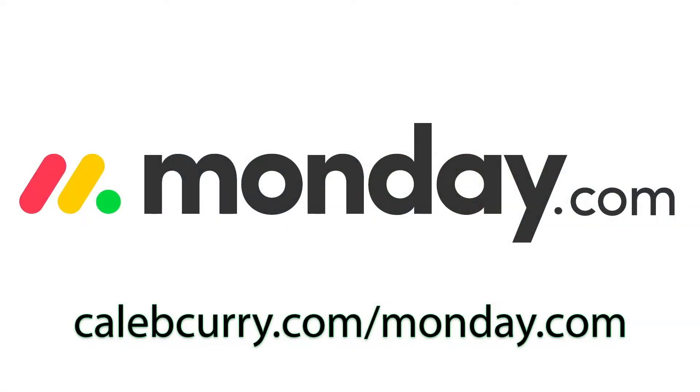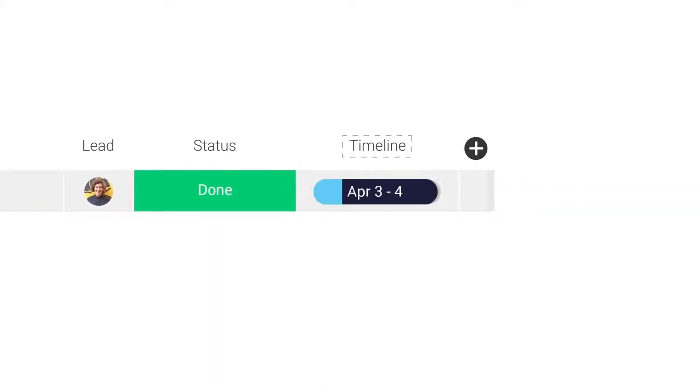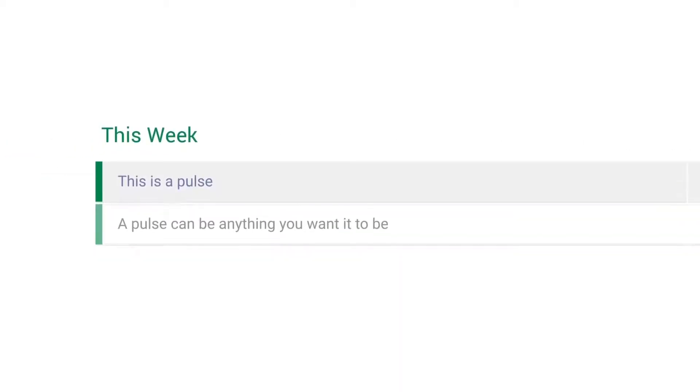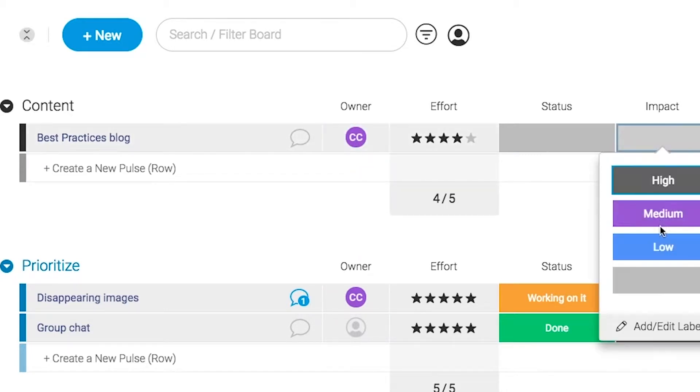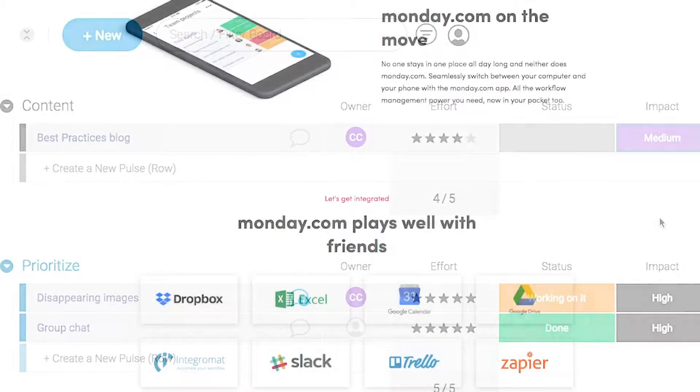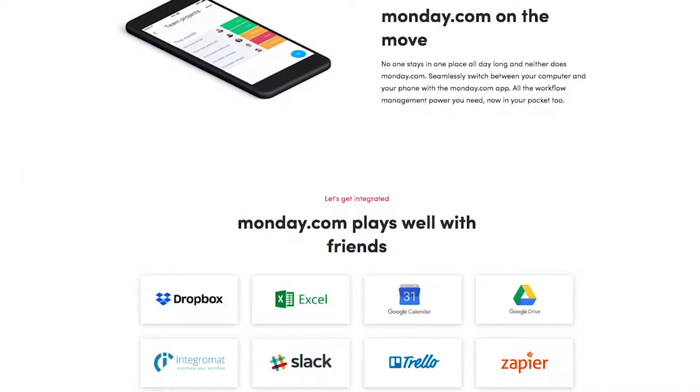Monday.com is your visual project management solution. This is the tool that allows you to see where every task or project stands with a single glance. With a fully customizable interface, you can create the exact workflow that you need for you and your team to get stuff done. Monday.com is available on mobile and integrates well with some of the most popular tools out there. So get your life in order by giving it a try for free. Link in the description.